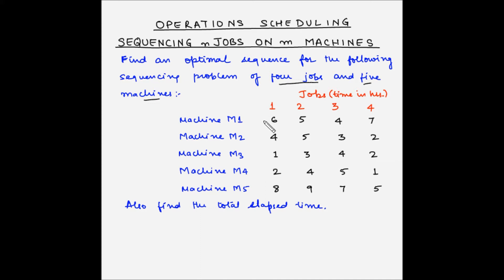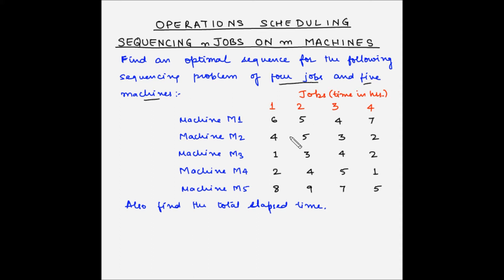We have also been given the processing time for each job on each machine. For example, job 1 takes 6 hours on M1, 4 hours on M2, 1 hour on M3, 2 hours on M4, and 8 hours on M5. Similarly, processing times are given for jobs 2, 3, and 4. We need to find the optimal job sequence to minimize the overall processing time, and also determine the total elapsed time.